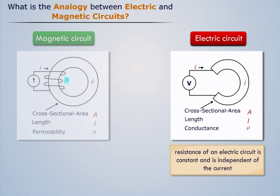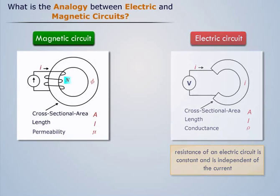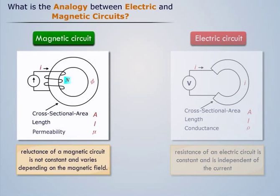Resistance of an electric circuit is constant and is independent of the current. But reluctance of a magnetic circuit is not constant and varies depending on the magnetic field.